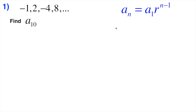Let's fill in the information we know. We already know the first term, A sub 1 — the first term in this sequence is negative 1; it's the first one listed. The n value is 10, since we're looking for the 10th term in this sequence.